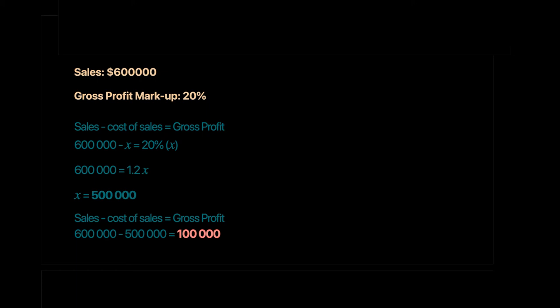So: 600,000 − X = 0.2X, which gives 600,000 = 1.2X, so X = 500,000. Cost of sales = 500,000, sales = 600,000, and therefore gross profit = 100,000. Remember: Sales − Cost of Sales = Gross Profit.